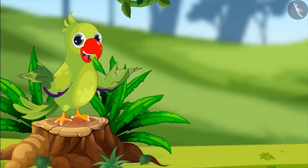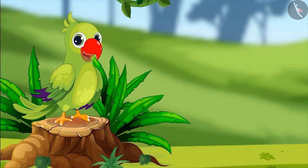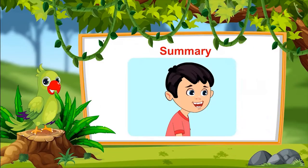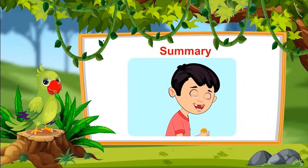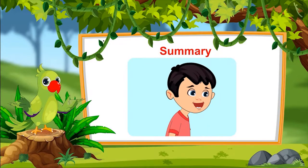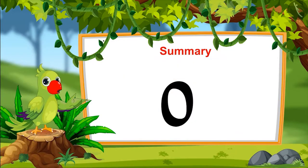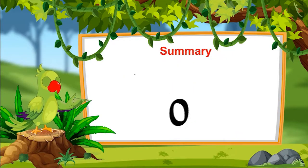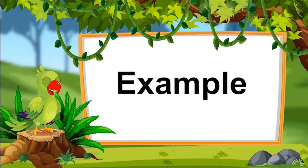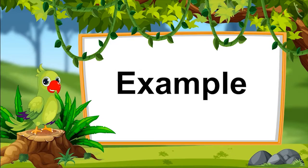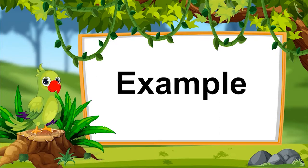Let us revise what we have learned today. When we reduce things till we do not have a single thing left, then we say we are left with zero. In the next video, we will look at some more examples to understand zero better. Till then, goodbye friends!